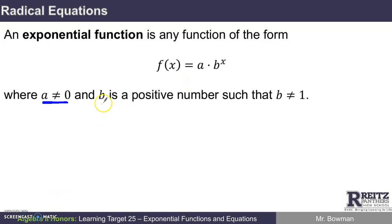b itself needs to be a positive number, and it needs to not equal one. It can't be one because if it was, you'd have one to the x power, and no matter what you chose for x, you'd get one. That's also kind of a linear situation.